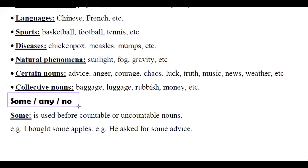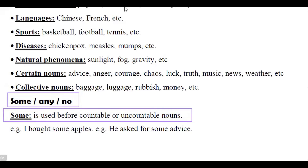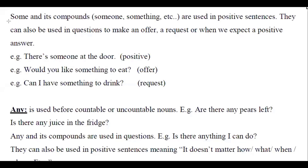Some and any end note: 'some' is used before countable or uncountable nouns. We can say 'I bought some apples' or 'he asked for some advice'. 'Some' and its compounds — someone, something, somewhere, etc. — are used in positive sentences. They can also be used in questions to make an offer, a request, or when we expect a positive answer.